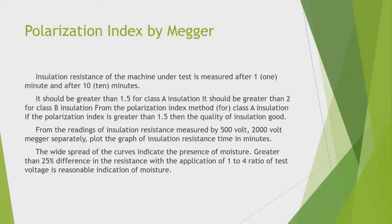The graph plots insulation resistance against time in minutes. A wide spread of curves indicates the presence of moisture. A greater than 25% difference in resistance with the application of different voltages, where the ratio of voltage is reasonable, is an indication of moisture.